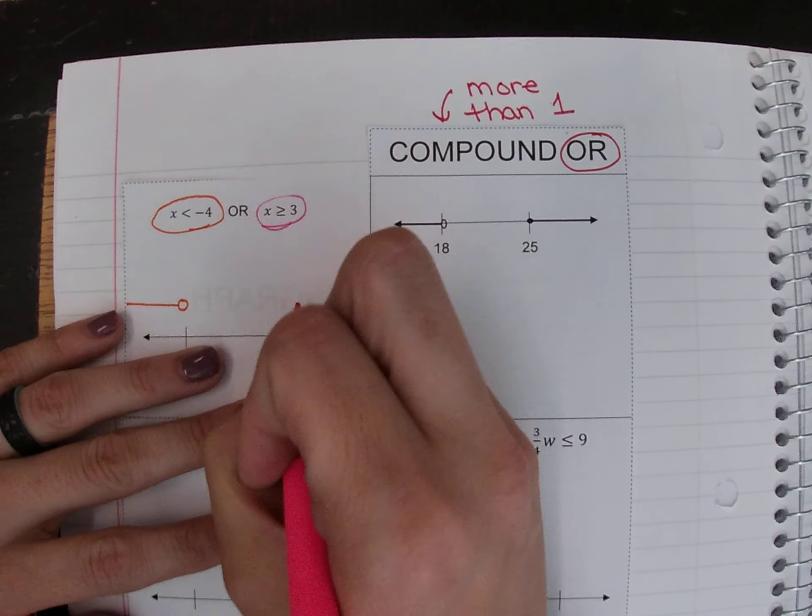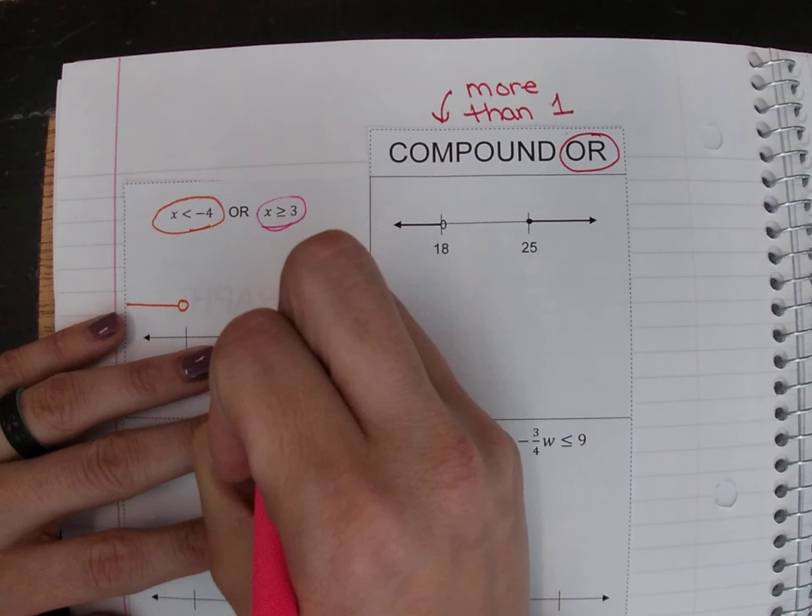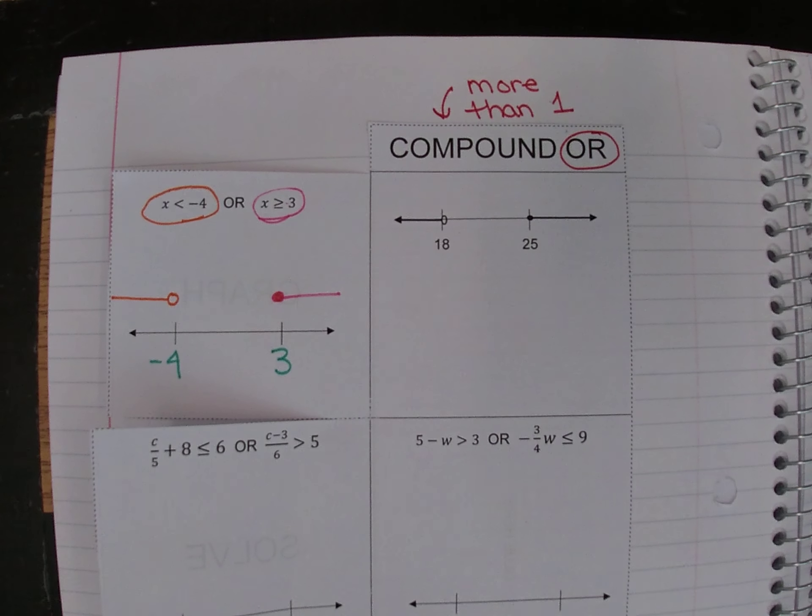For x is greater than or equal to three, it is 'or equal to,' so it gets a solid circle. Greater than tells me to go to the right. When we are using the word 'or,' it means we get one or we get the other — we don't need both of them to be happening. So we copy down onto the number line anywhere where we see at least one. Think of the number line in three sections: left, middle, and right. Is there at least one thing being graphed to the left of negative four? Yes, so bring that down. Is at least one happening in the middle? No, so nothing gets graphed there. Is at least one happening to the right? Yes, so that gets graphed.